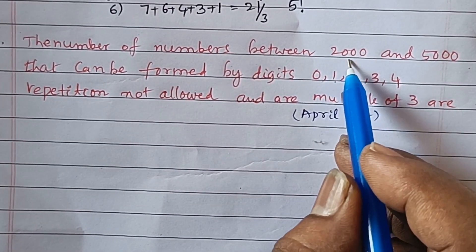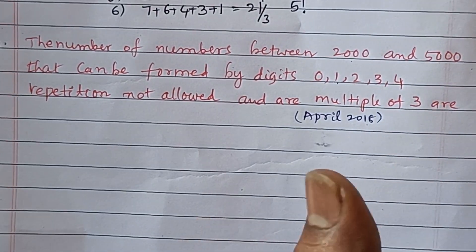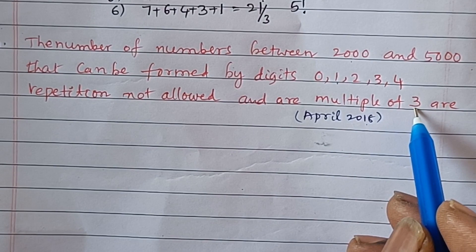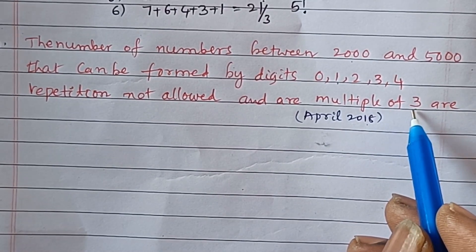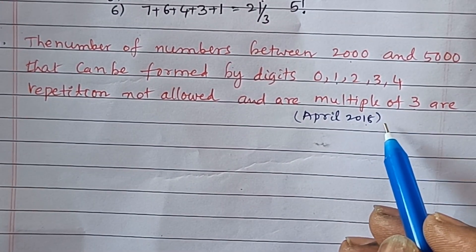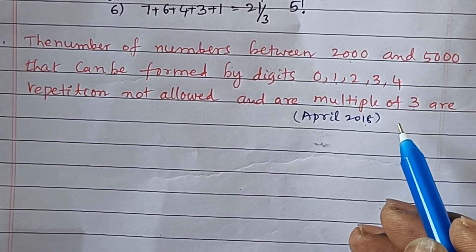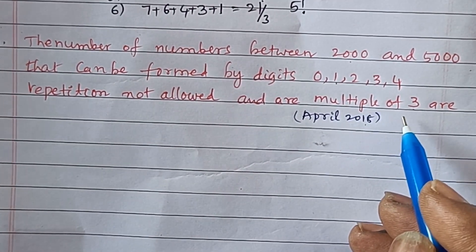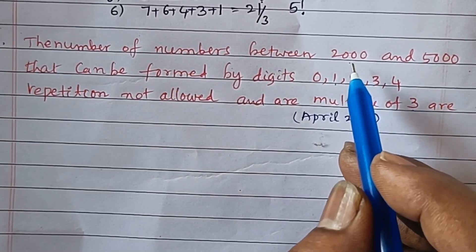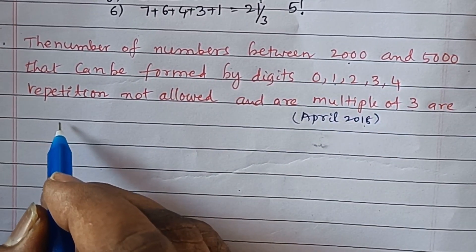We need to find the number of numbers between 2000 and 5000 that are multiples of 3. The numbers must be divisible by 3 and must be 4-digit numbers.